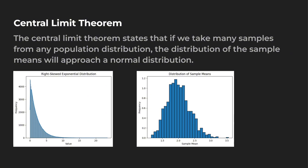The central limit theorem states that if we take many samples from any population distribution, the distribution of the sample means will approach a normal distribution. On the left here we have a right-skewed exponential distribution — there's a ton of values near zero, but as we approach 10 there are very few. Once we take the mean of a lot of different samples, you can see how we build this out. Most of the means are anywhere from about 1.8 to 2, which makes sense because the frequency is mostly around zero to about two or three.